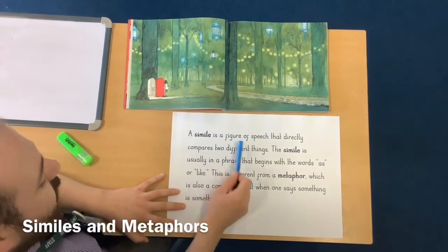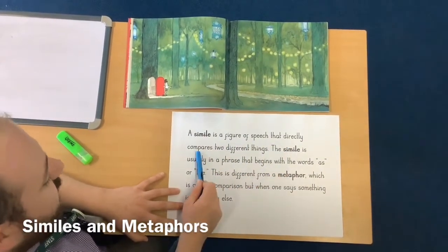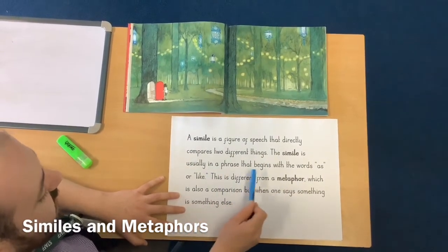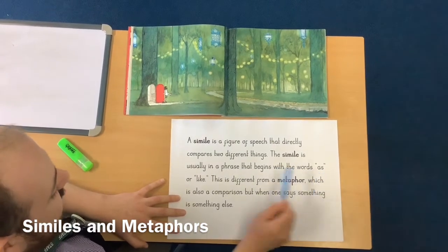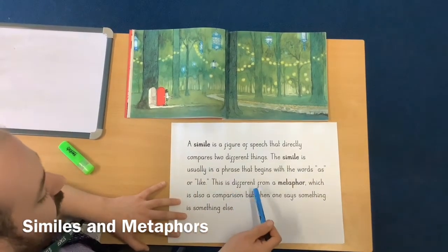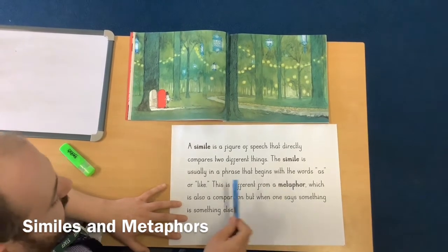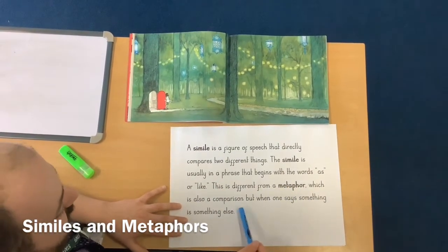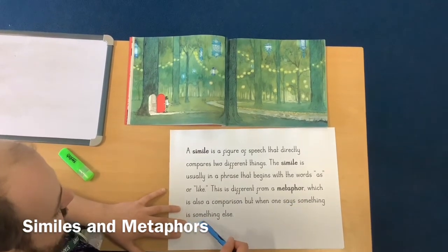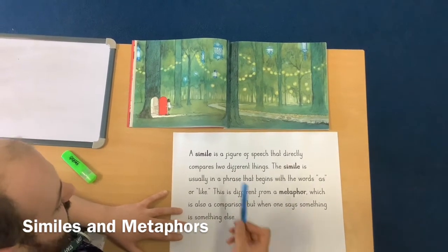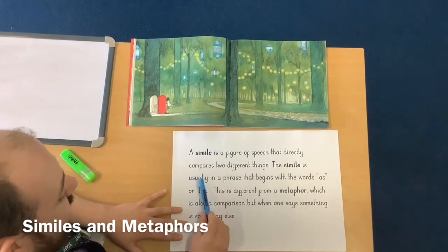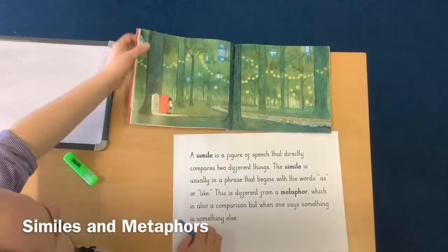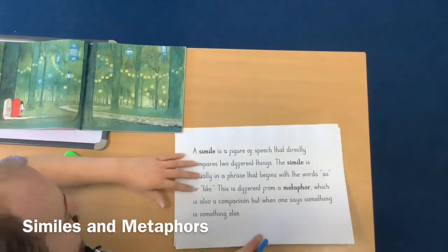A simile is a figure of speech that directly compares two different things. The simile is usually in a phrase that begins with the words 'as' or 'like'. This is different from a metaphor — just remember that a metaphor is also a comparison, but when one says something, it says it is something else. So a simile uses the words 'like' and 'as', and a metaphor says that it is something else. Let's take a look at some examples.